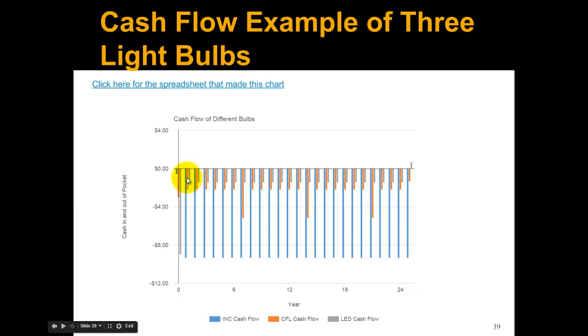Then something happens in this year. For some reason, the CFL bar goes even lower, and this is because the CFL bulb burns out at this year and we have to replace it. Then again it burns out this year, we have to replace it, and then it burns out again this year, we have to replace it. It turns out in this example the incandescent bulb burns out every year, so we're replacing this every year, and that's why the bars stay constant.